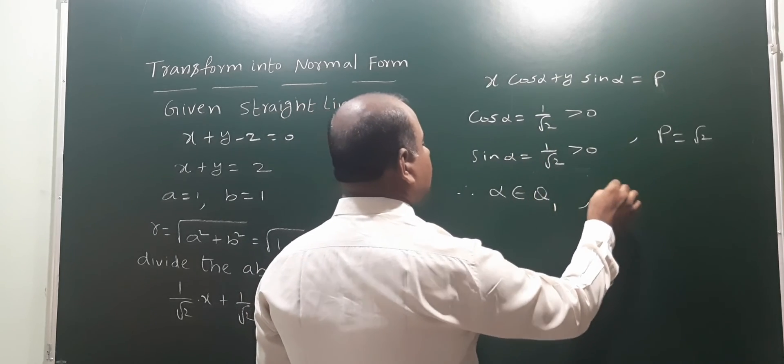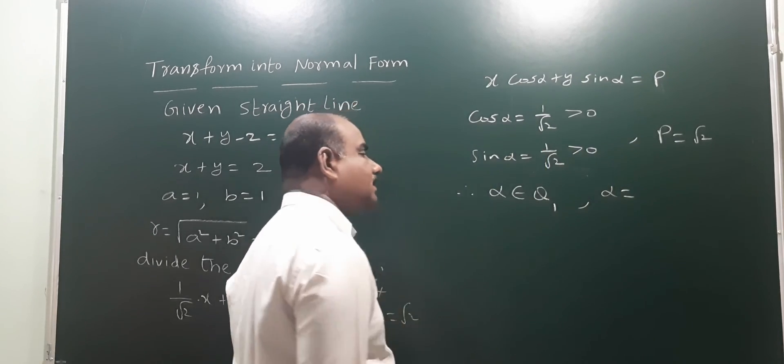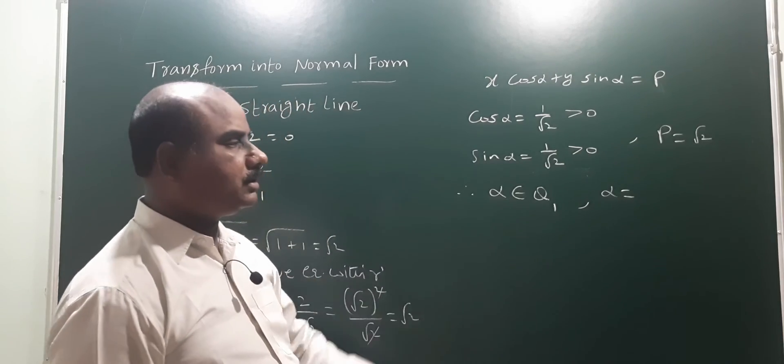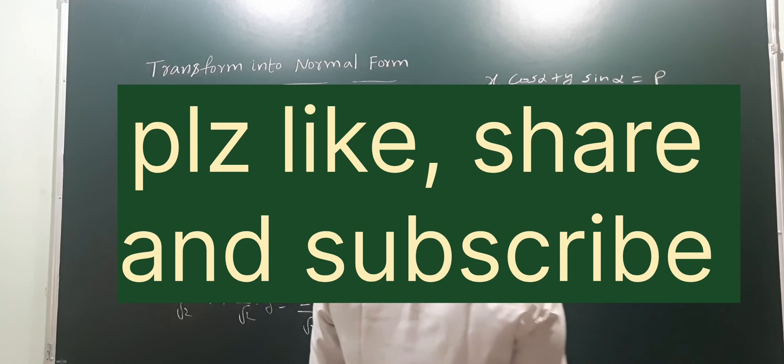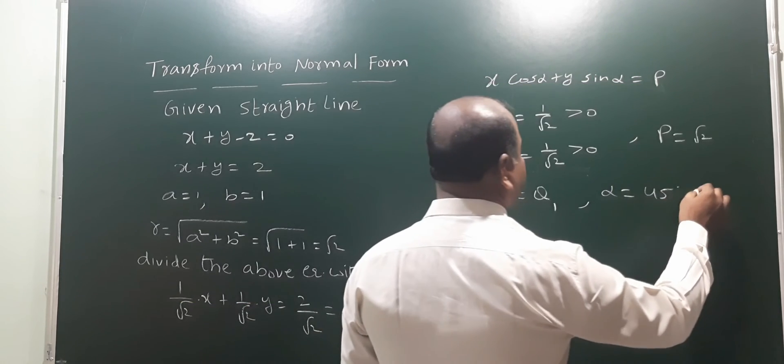So, 1 by root 2 is cosine and sine in the first quadrant, which means alpha equals 45 degrees or pi by 4.